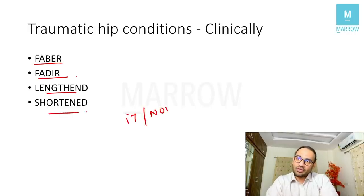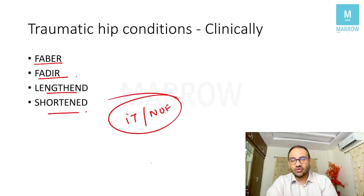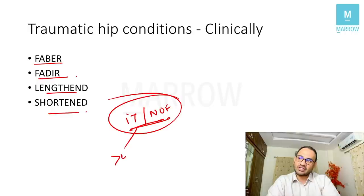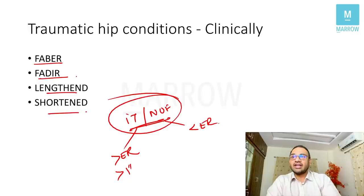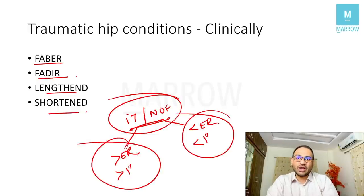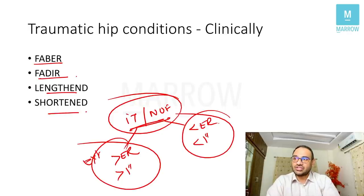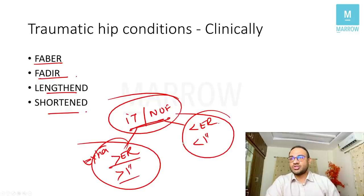For intratrochanteric versus neck of femur fracture: intratrochanteric has more external rotation than neck of femur, which has less external rotation. Intratrochanteric has more than one inch shortening while neck of femur has less than one inch shortening. Remember: intratrochanteric or extra-capsular fracture — everything is extra: shortening is extra and external rotation is also extra.